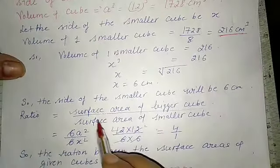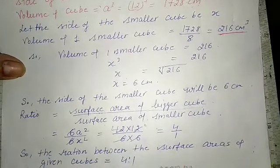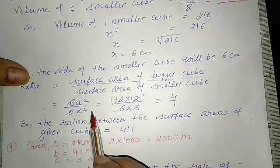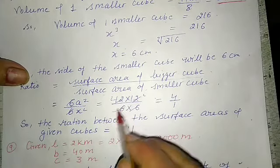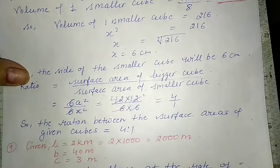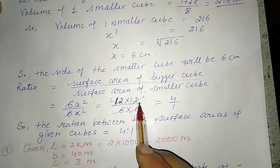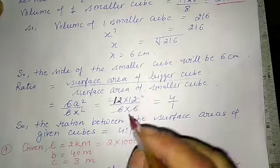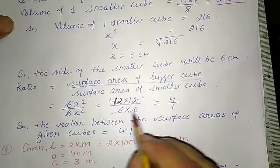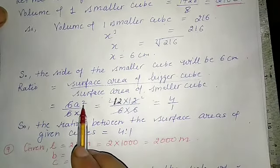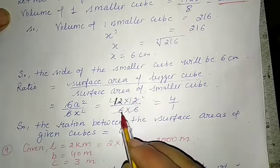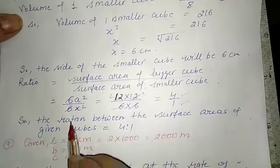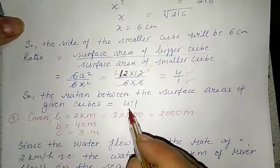Now we find the ratio of the surface area of the bigger cube to the smaller cube. Surface area of bigger cube = 6a² and smaller cube = 6x². The 6 cancels, leaving a² ÷ x² = (12 × 12) ÷ (6 × 6) = 144 ÷ 36 = 4. So the ratio of surface areas is 4 : 1.